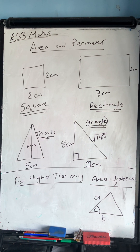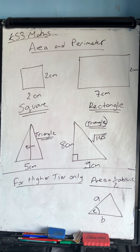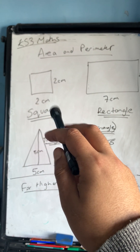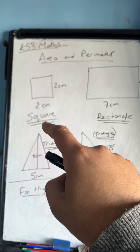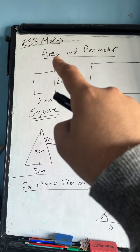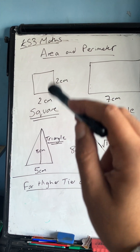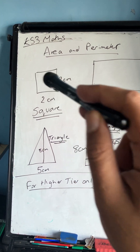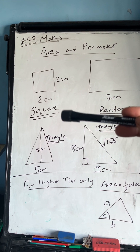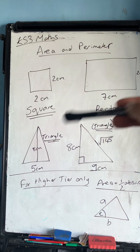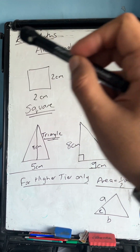Starting off with a square: a square has equal length, meaning the length and width are the same. It also has equal angles — each angle inside is 90 degrees. Angles inside a four-sided shape, i.e. a quadrilateral, add up to 360 degrees. So both the angles and the lengths are the same in a square.